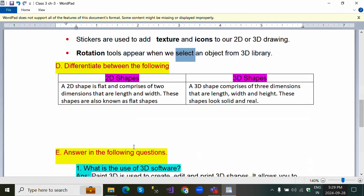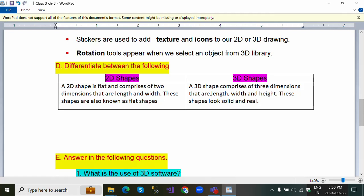Differentiate between 2D shapes and 3D shapes: A 2D shape is flat and comprises of two dimensions that are length and width. In 3D there are three dimensions: length, width and height. These 2D shapes are also known as flat shapes, and 3D shapes look solid and real.